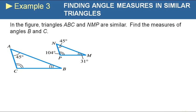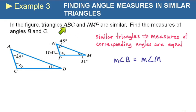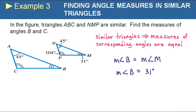In example 3, triangles ABC and NMP are similar. Find the measures of angles B and C. Since they're similar, corresponding angles are equal. A corresponds to N, B corresponds to M, and C corresponds to P. So angle B equals angle M; since M is 31°, B is 31°. Angle C corresponds to angle P; since P is 104°, C is 104°.